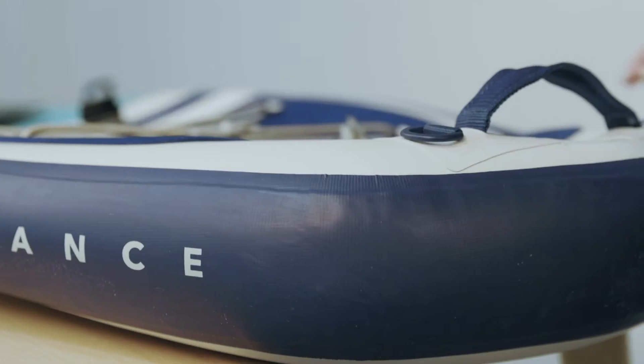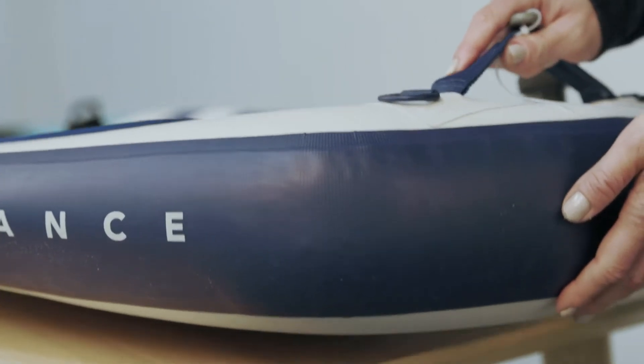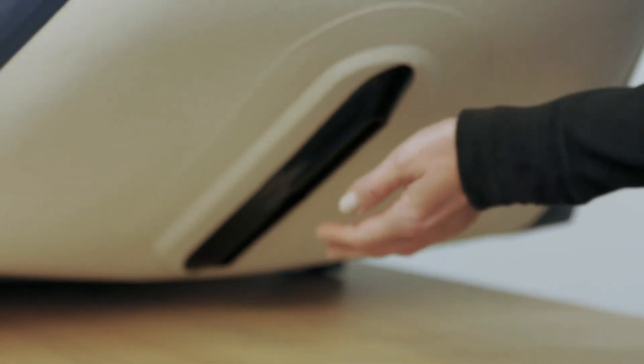Now we'll go over how to remove and replace your inflatable valve. Before we start, please note the bottom section of the valve inside the board is not attached to anything and it can become easily lost within the board. You'll want to hold on to the bottom of the valve by placing your hand under the board before starting to remove the valve.